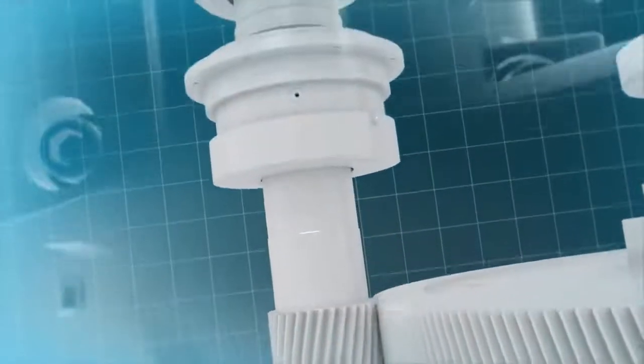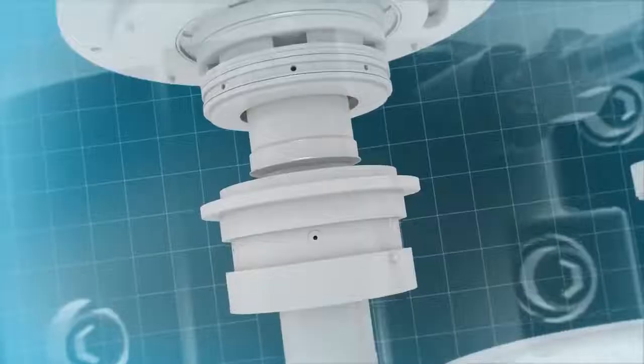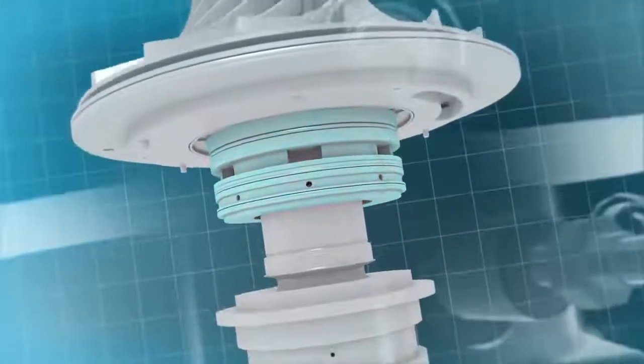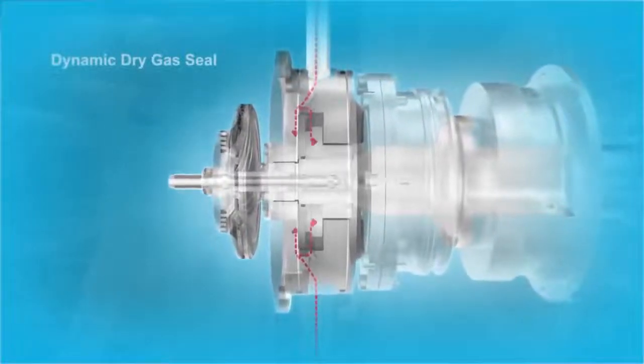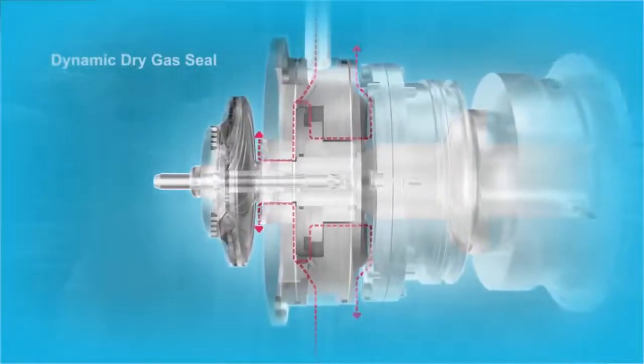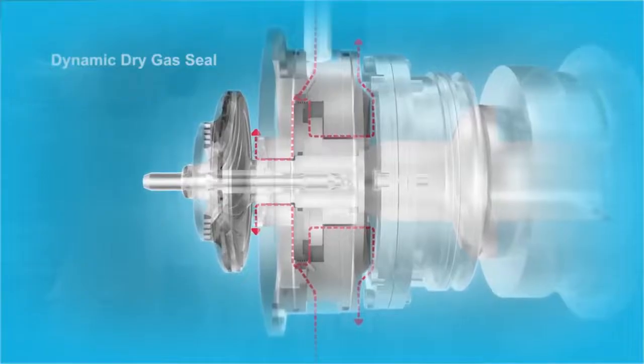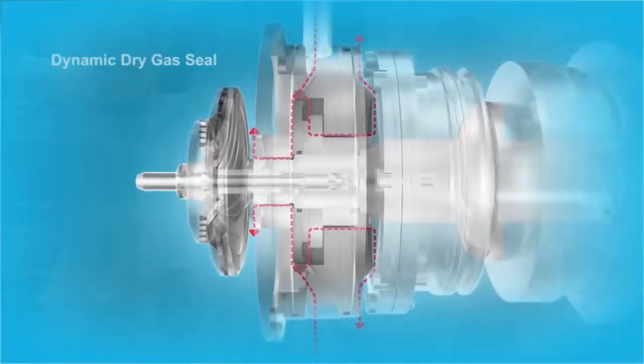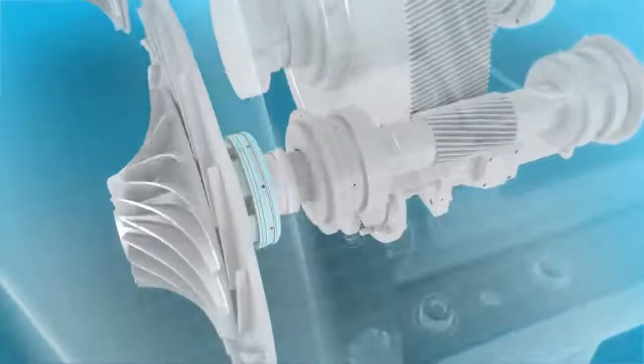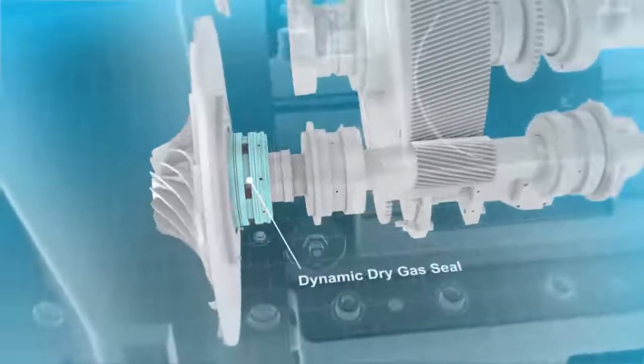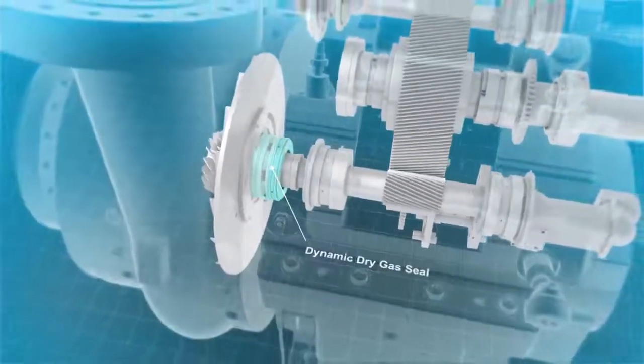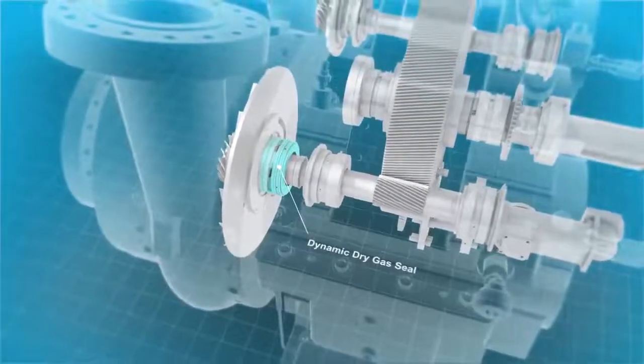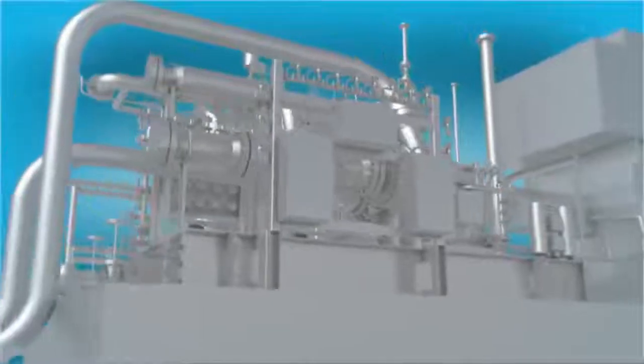For applications where process gas leakage is restricted, or when process gas needs to remain within the system, our integrally geared compressors can be built with dynamic dry gas seals. These seals can be supplied in single, double, or tandem arrangements, depending on the application. In fact, Atlas Copco was the first compressor manufacturer to implement dry gas seals on integrally geared compressors.